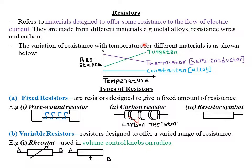The variation of resistance with temperature for different materials is as shown in these particular graphs. You can see that a material called tungsten — its resistance usually varies directly proportional with temperature. This simply means that as the temperature increases, the resistance of tungsten material also increases.